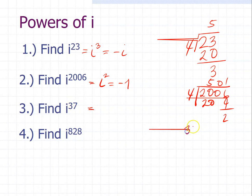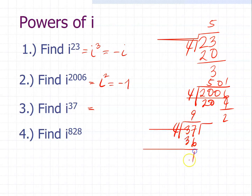Next, i raised to the power of 37. Dividing 37 by 4 gives 9 remainder 1. So i to the power of 37 equals i to the power of 1, which equals i.